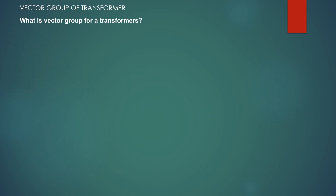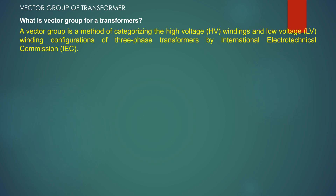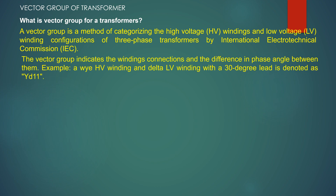A vector group is a method of categorizing the high voltage winding and low voltage winding configurations of a three-phase transformer, defined by the International Electrotechnical Commission (IEC). The vector group indicates the windings connection and the difference in phase angle between them. For example, a star HV winding and a delta LV winding with a 30-degree lead is denoted as YD11.